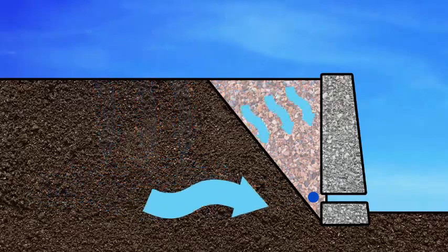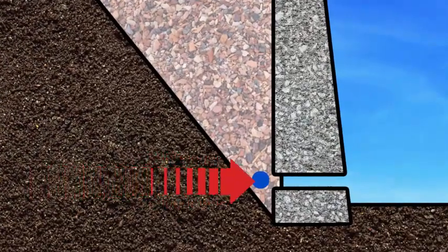A series of weep holes in the base of the wall will also minimize the effects of hydrostatic pressure exerted upon the wall.